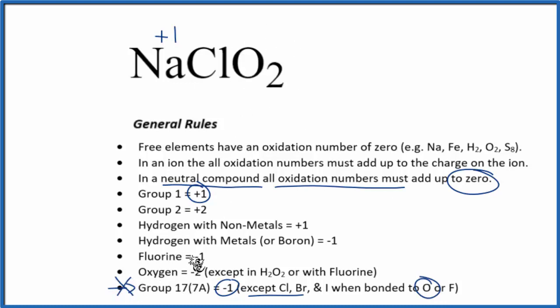We do know that oxygen has a minus two oxidation number in most cases. So we can put minus two here, that's for each oxygen, and we don't know the chlorine.